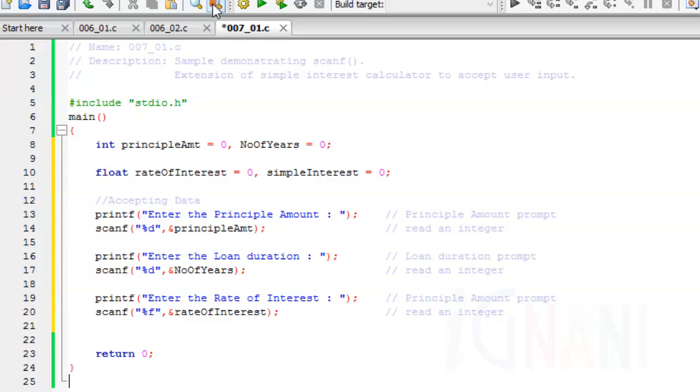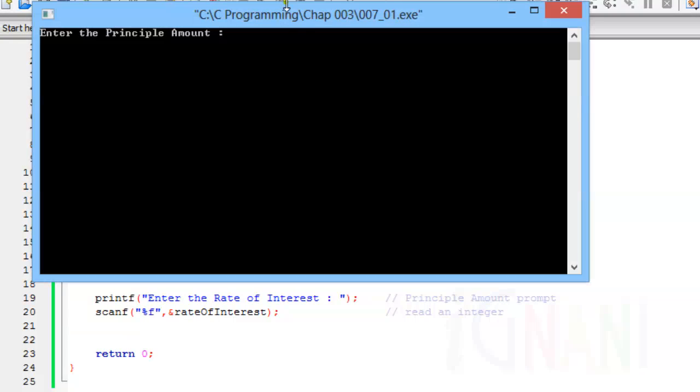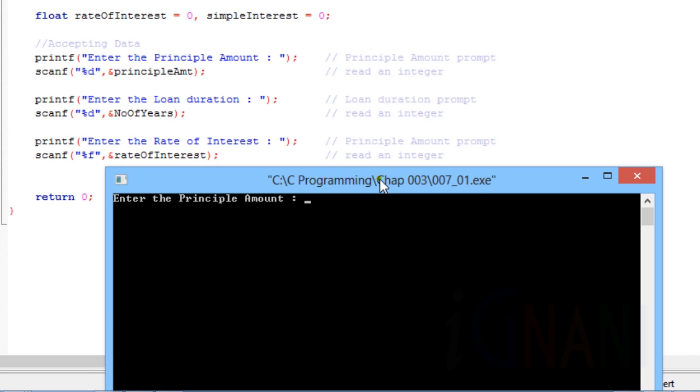Let me execute this program now. Line 13 is responsible for printing this string, enter the principal amount, and it positions the cursor at the end of the line. This message is known as a prompt, since it tells the user to take a specific action.